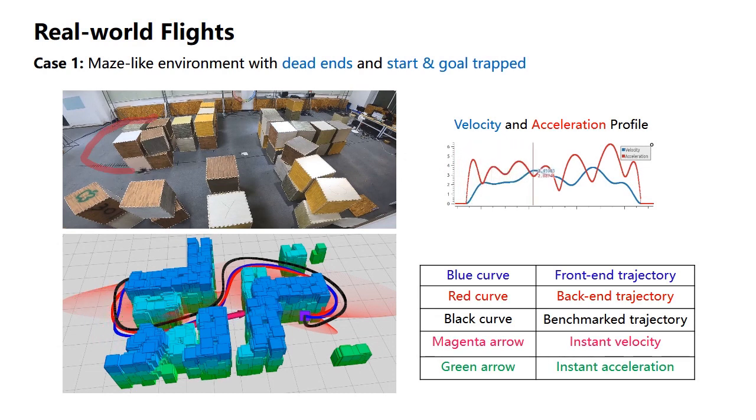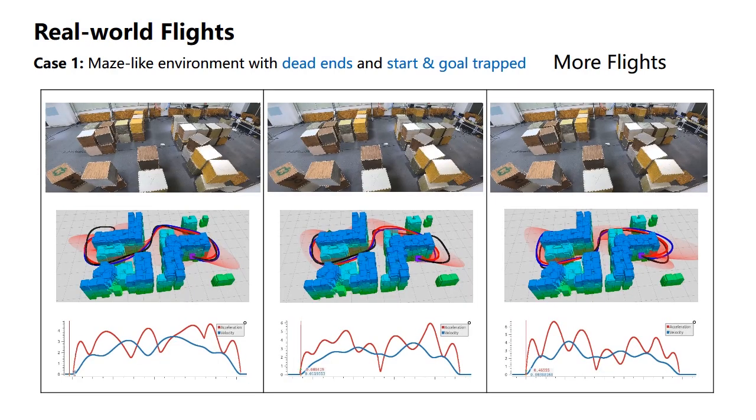In this maze-like environment where dead ends exist and the start and goal positions are trapped, our method generates a smooth trajectory whereas the benchmarked result is more jerky. Here are some more tests in the maze-like environment.